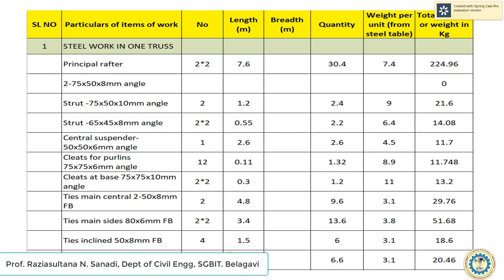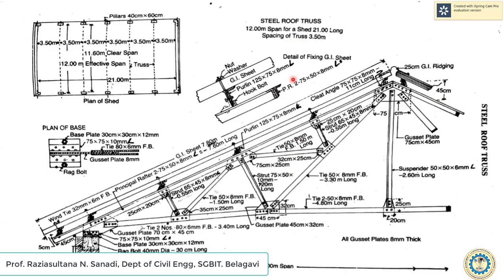This is the measurement sheet with details for calculation of quantities. The tabular column has serial number, particulars of items of work, member, length, breadth, quantity, weight per unit from the steel table, and total quantity or weight in kg. We will first calculate steel work in one truss, then multiply by the total number of trusses (5). Only one side of the truss is given, so we must consider both sides.